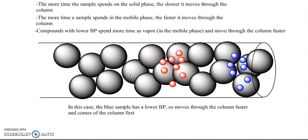So in the example that we're looking at, as we flow carrier gas through the column, we can see that the blue compound has traveled farther and faster through the column, and the red compound has traveled slower and not as far through the column. In this case, the blue sample has a lower boiling point - it moves faster through the column - and the red compound is slower and has a higher boiling point.